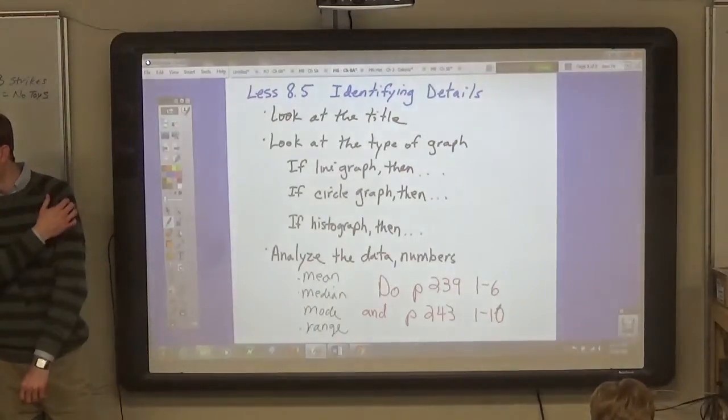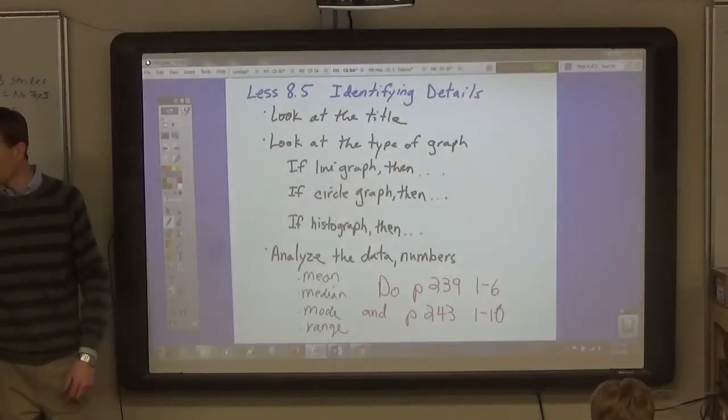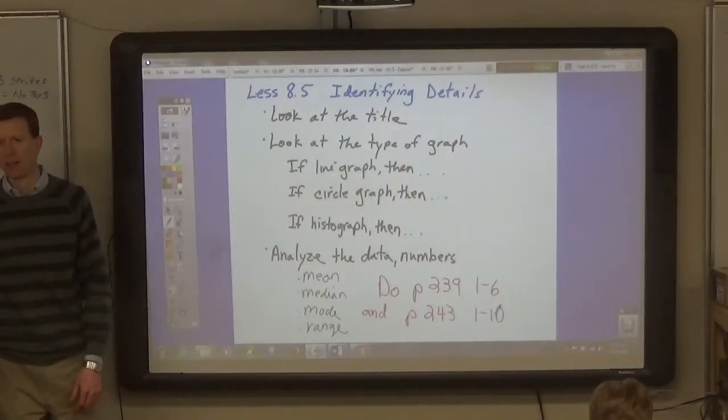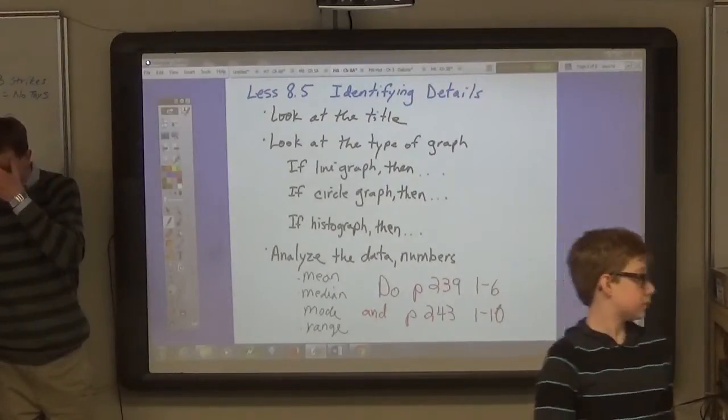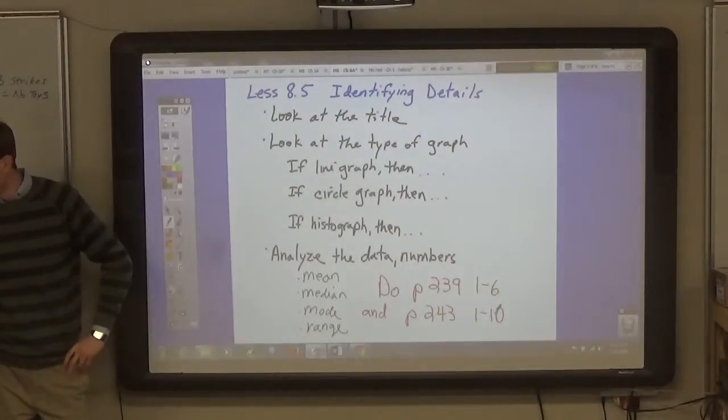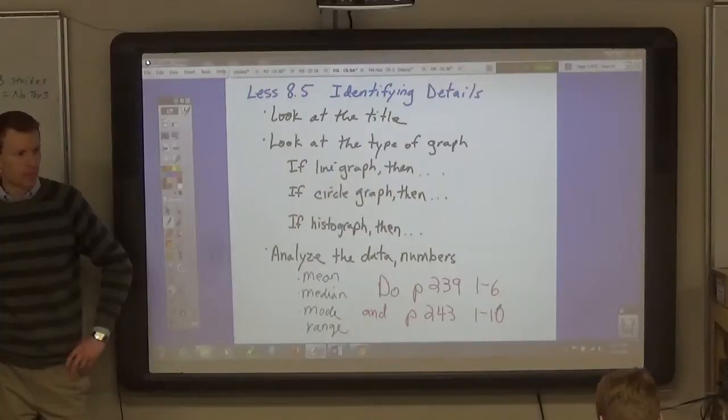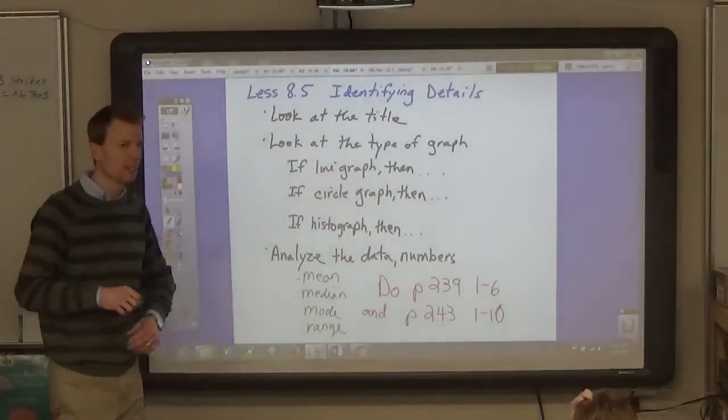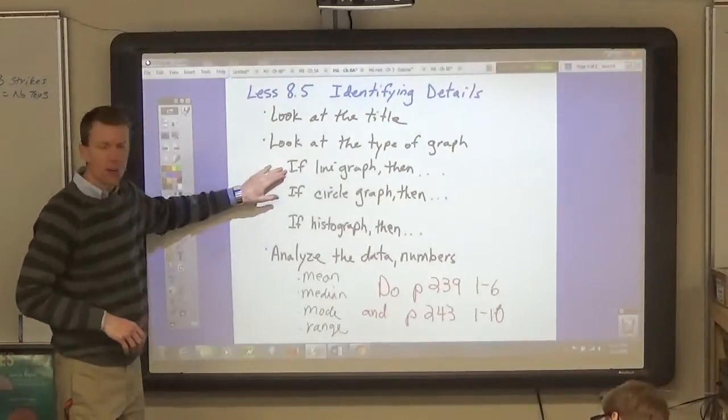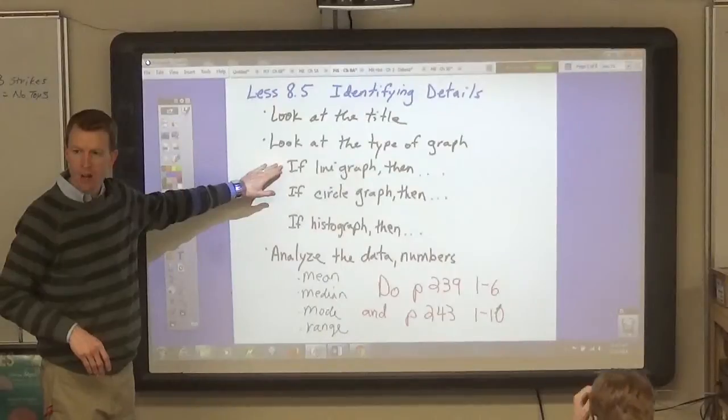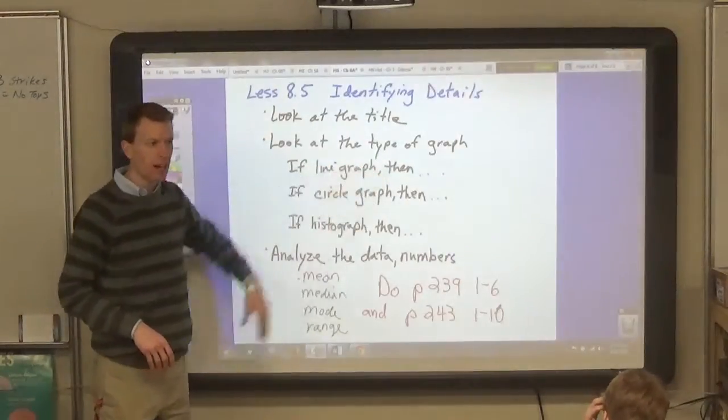Number two has another question about that. Let's do number three. Peter predicted that as the day gets later, people's reaction times increase, so he tested his classmates' reaction times throughout the day. Was Peter's prediction accurate? What type of graph is this? This is a line graph, and what do line graphs tend to show? How things change over time.